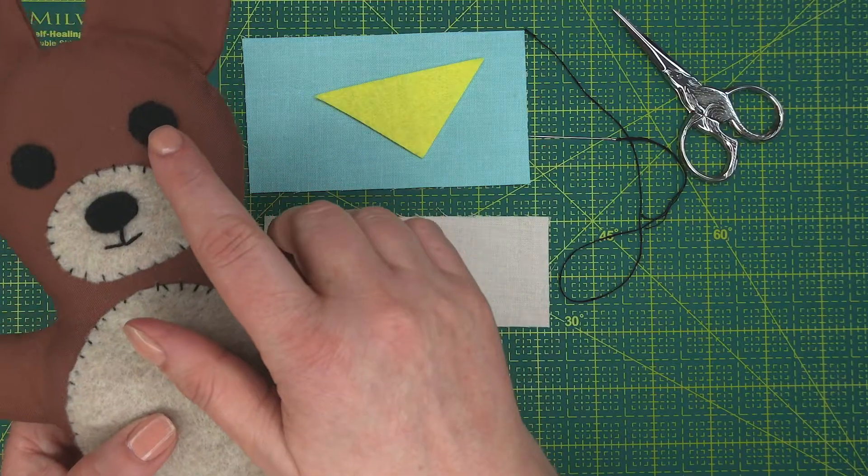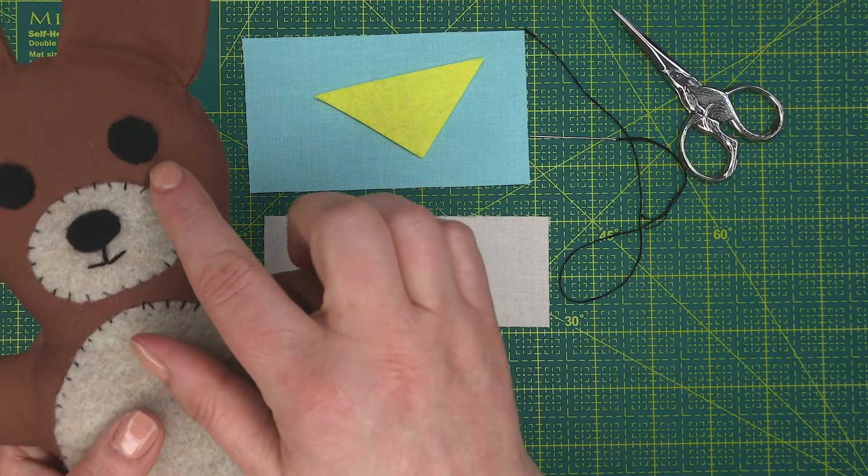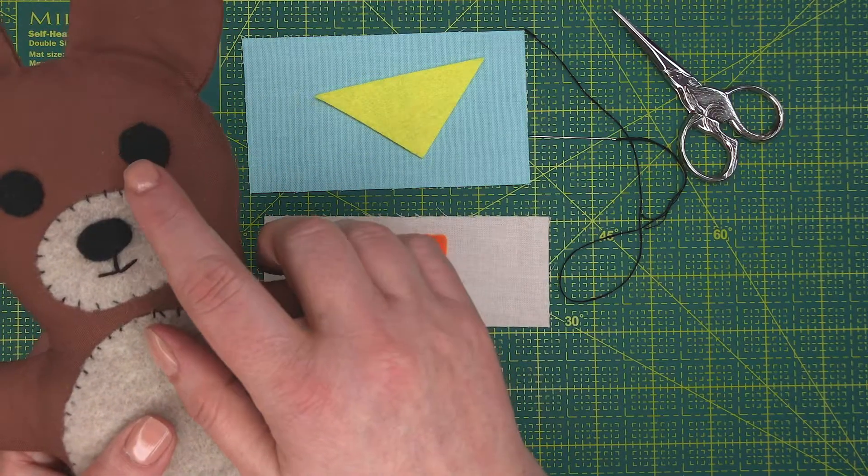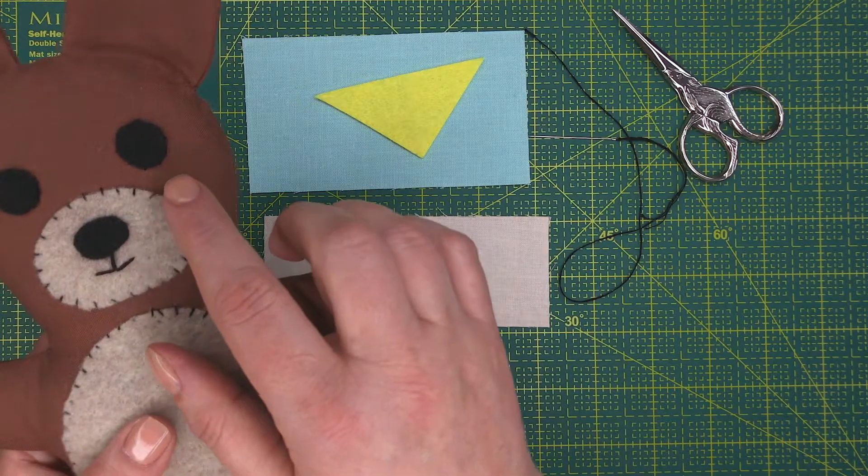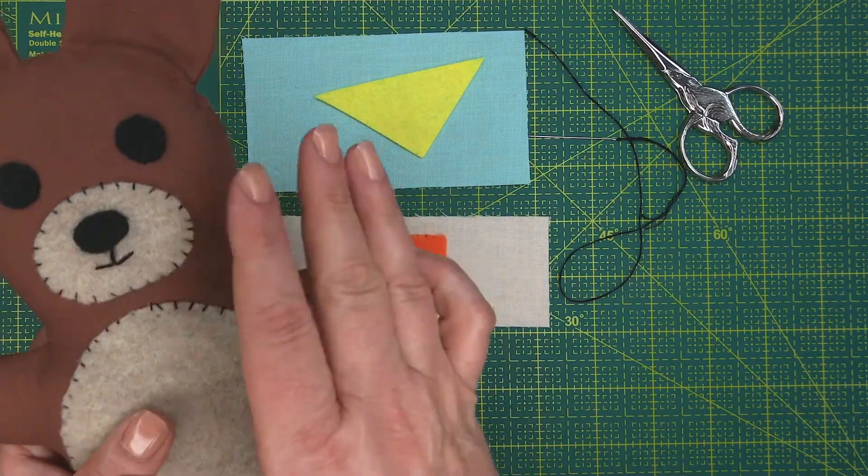As you can see in the eyes, I've used matching black thread on a black eye and worked the stitch around the eye so that you don't see the stitch. So this stitch can be used in both ways.